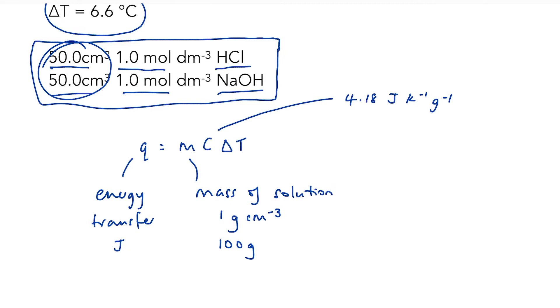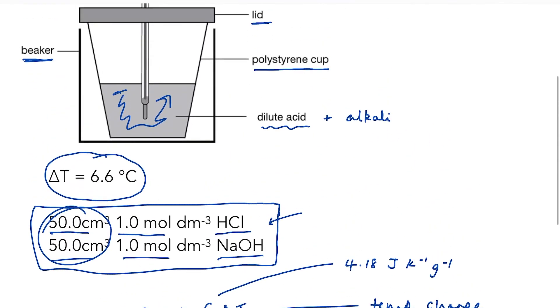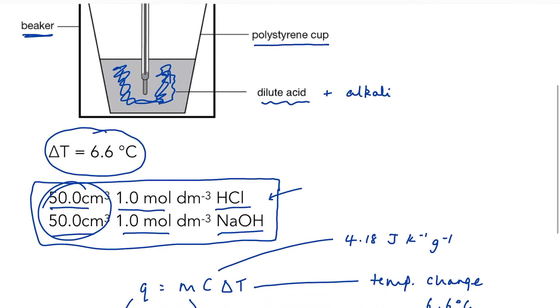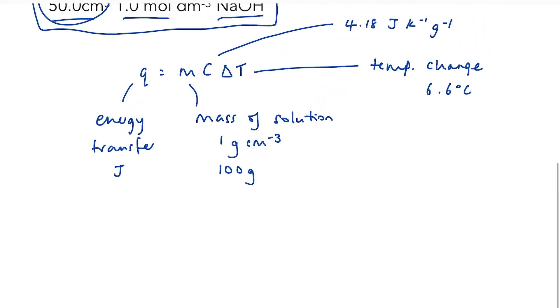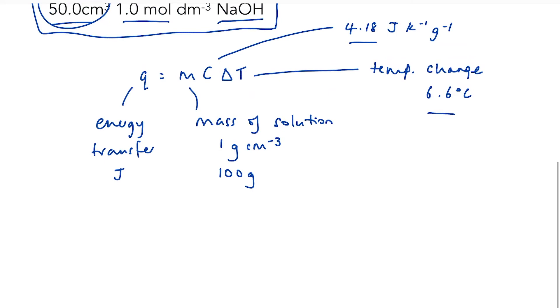And then finally, delta T is our temperature change, so the maximum difference in temperature, which in this case was 6.6 degrees C. So our final assumption is that all the heat that is produced from this neutralisation reaction ends up in the water and that the thermometer measures that temperature change. So let's plug some numbers in and see what we come up with. So mass of solution, it's going to be 100 times 4.18 times 6.6. So Q comes out to be 2772 joules.